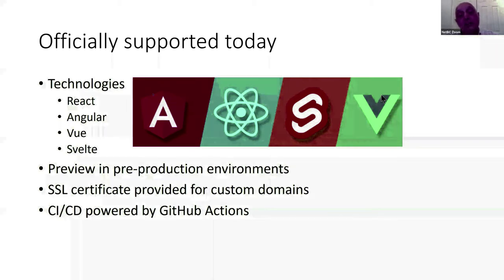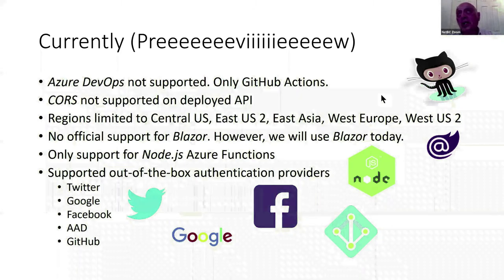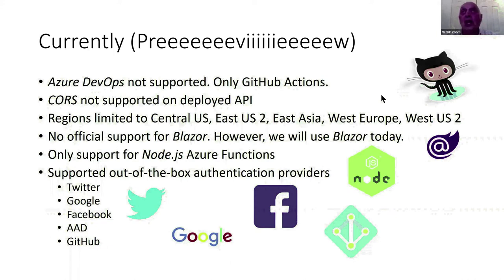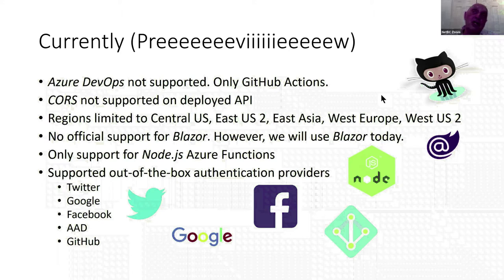CI/CD is powered by GitHub Actions. Bear in mind this is in preview — Azure DevOps is not supported yet; only GitHub Actions can be used for workflow. CORS is not yet supported on your deployed API. Everything works because your Static Web App and your API reside under the same web application, so there's no CORS problem. But if you want to access the API from a mobile phone or similar, you'd have a CORS problem — this will be resolved in the future. The regions at the moment are limited to Central US, East US, East Asia, West Europe, and West US.